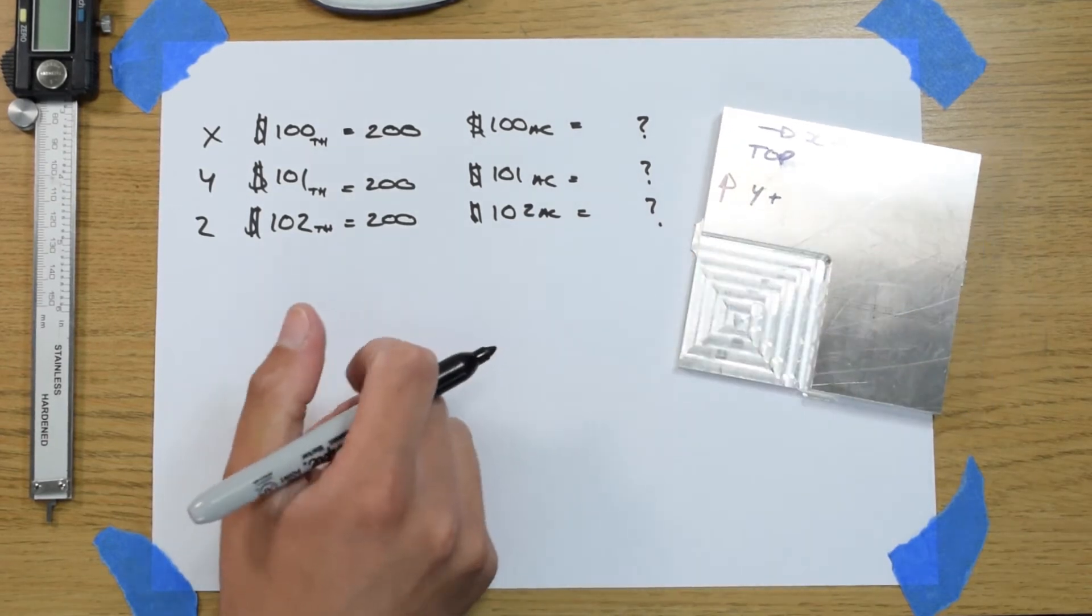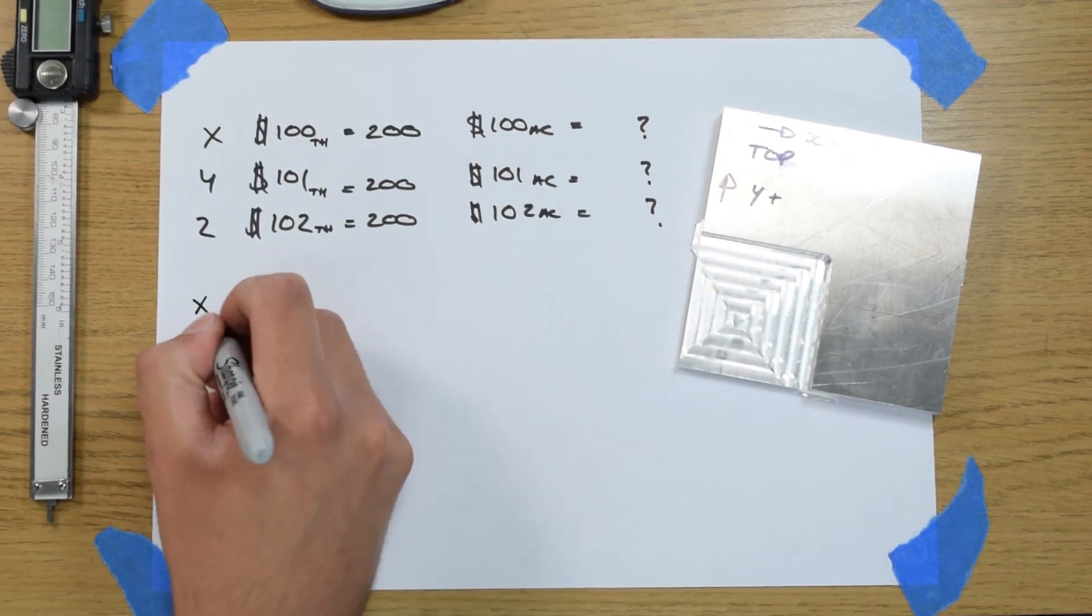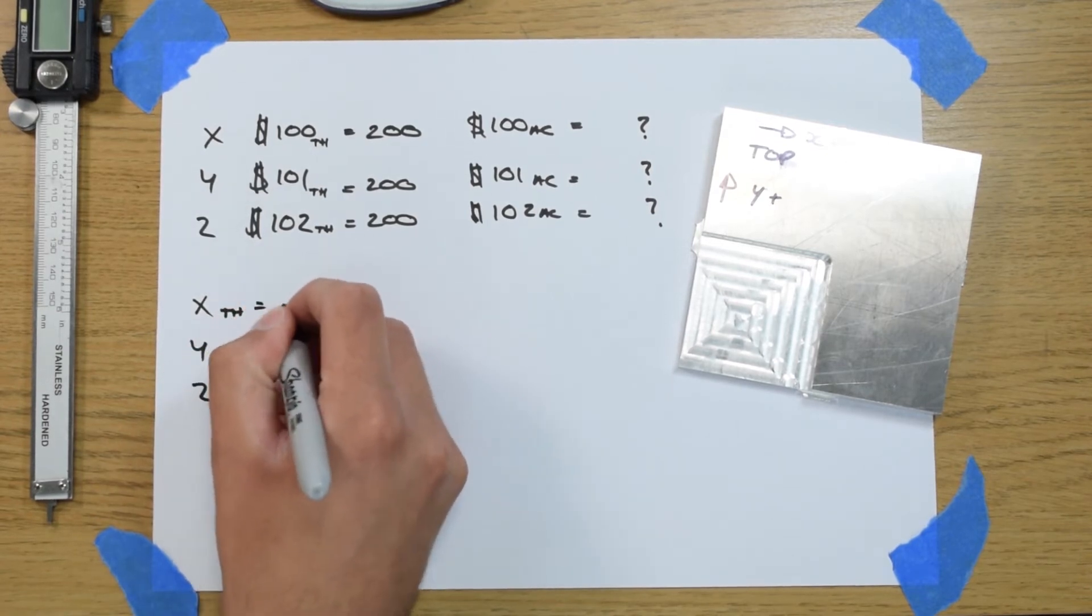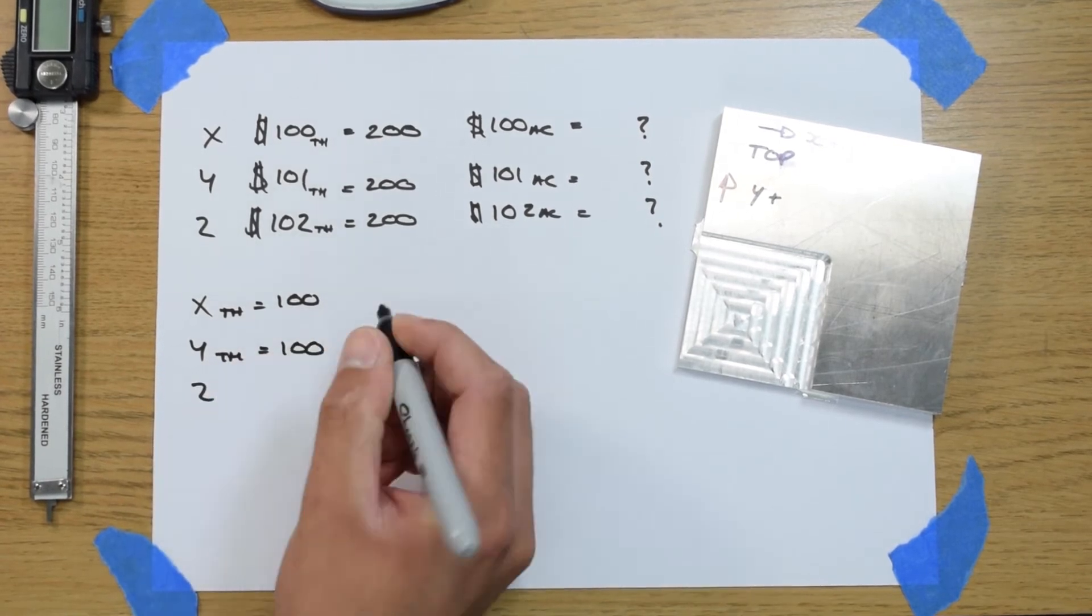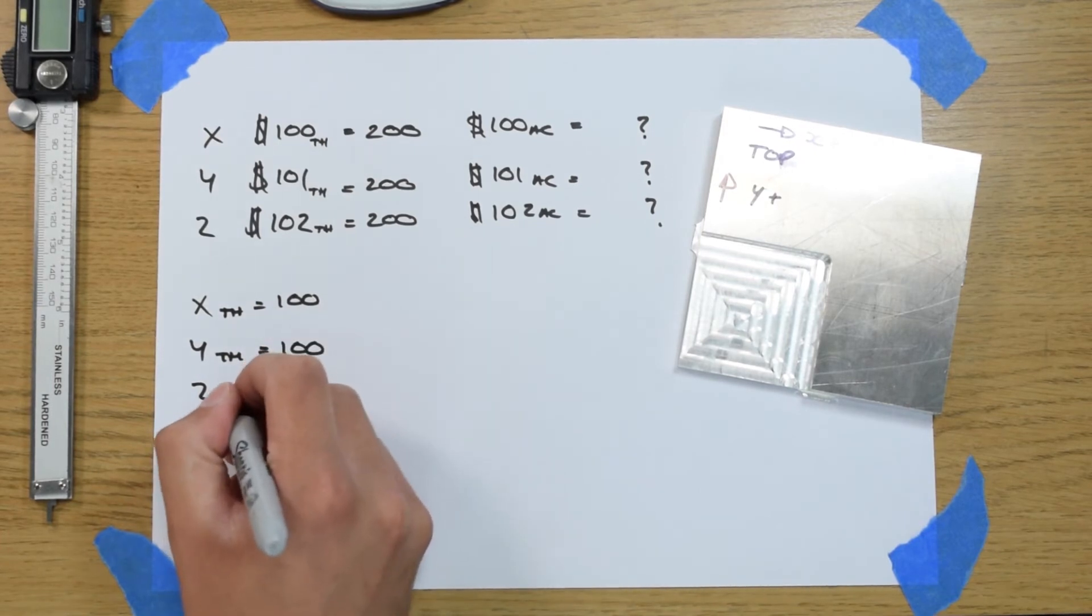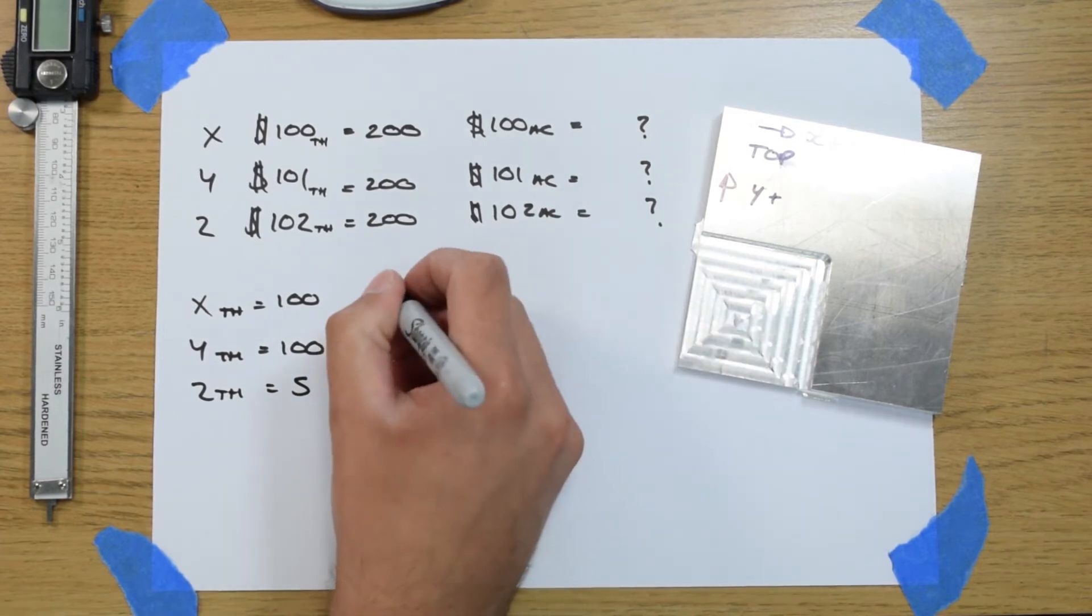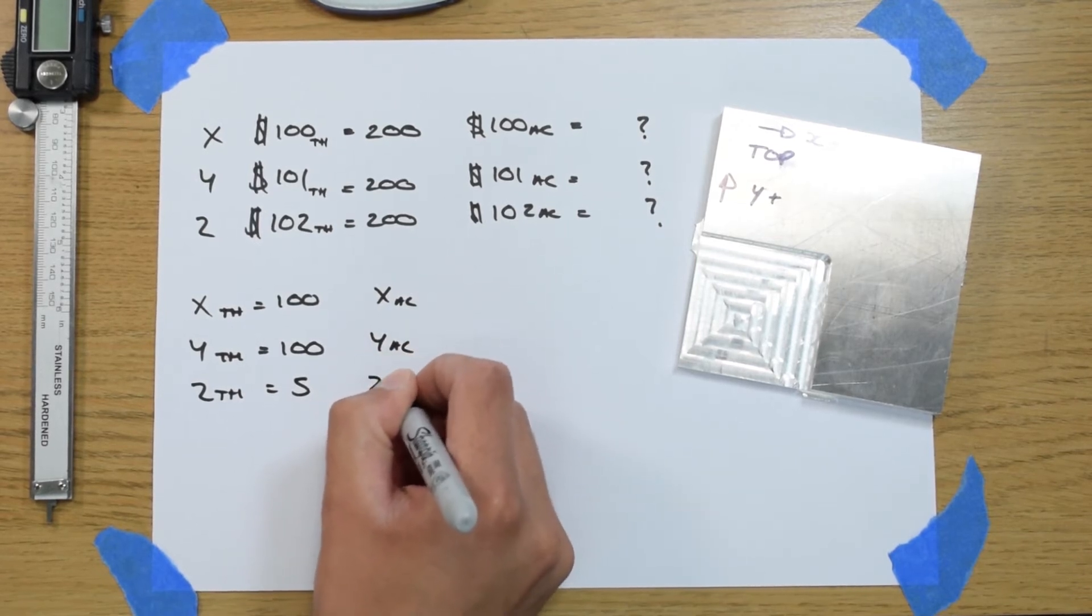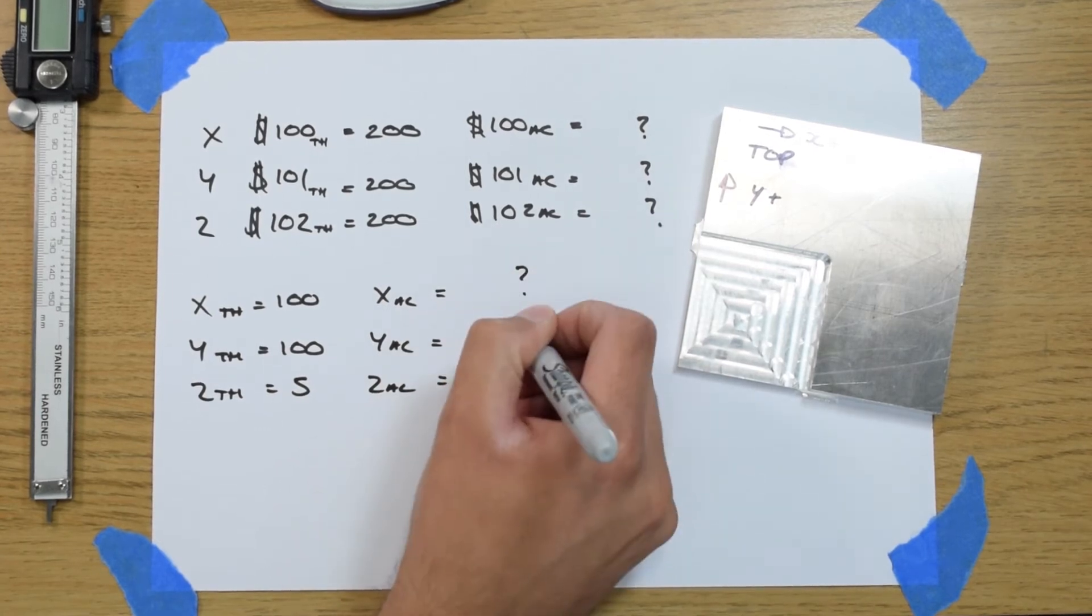Now for our piece here I set up the job so it's a 100mm square piece. So for the measurements we need to have our theoretical values which is 100mm for X and Y. And then for the Z I set it to cut a 5mm deep pocket. So the theoretical value of that is 5. And what we need to measure is our actual values. So X actual, Y actual, and Z actual. And these are what we're going to measure.